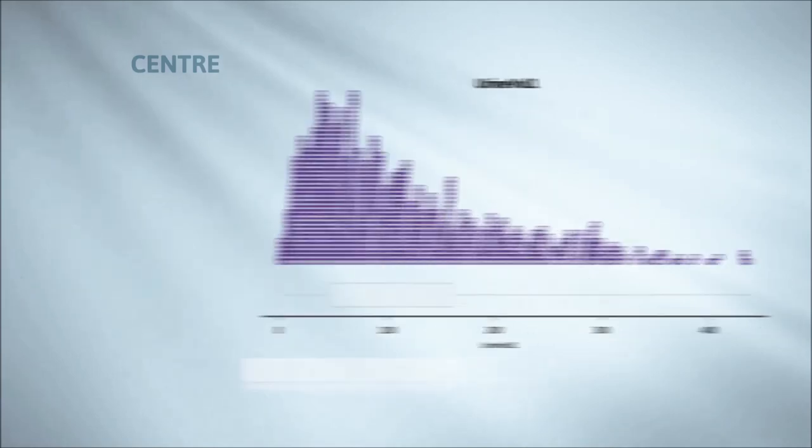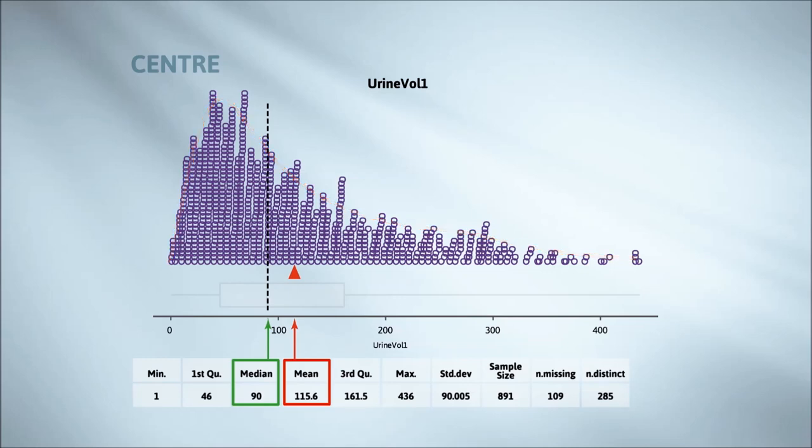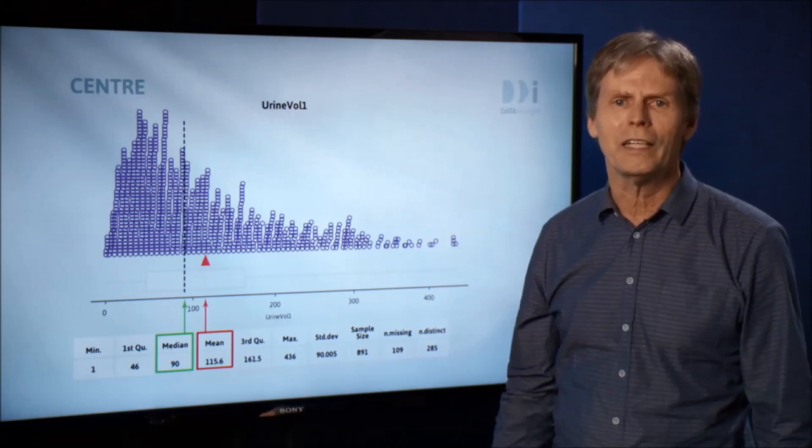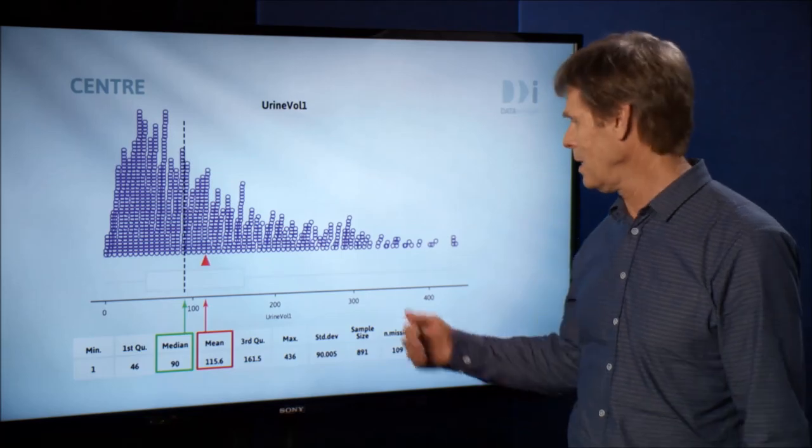For the NHANES variable urine volume 1, the median and the mean are quite different, 90 versus 115.6. This plot is far from being symmetric. This sort of shape is said to be skewed. With skewed data, there is no sharp notion of center. Different ways of thinking about the idea of center produce rather different answers, as we see with the mean and the median here.